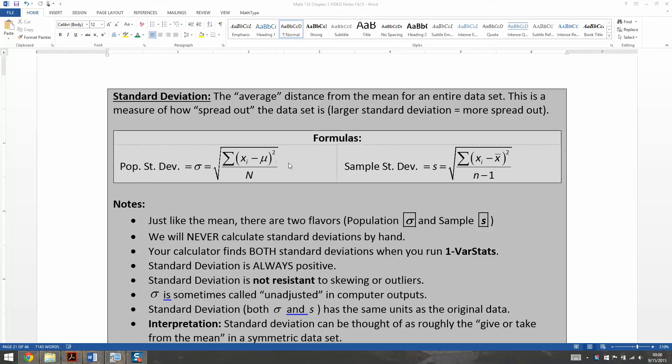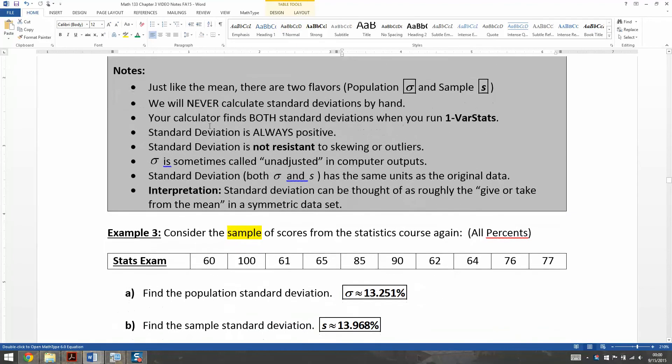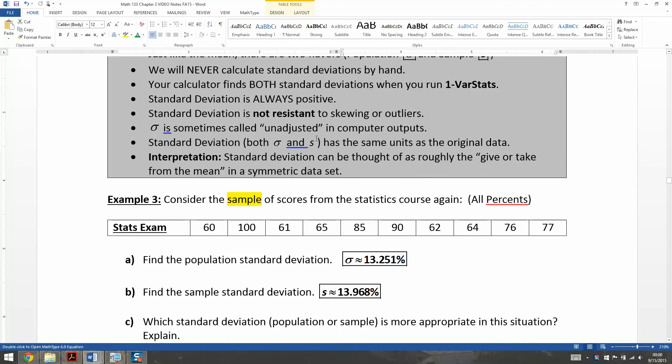In the last video, we learned how to find the standard deviation, both types, both the population and the sample standard deviation. And then we learned all sorts of things about them. They're a measure of spread, they're not resistant, the sigma is called unadjusted, they're always positive, and you're going to find them with your calculator when you run one-variable stats.